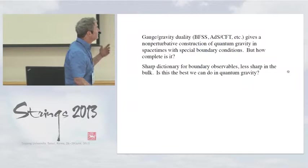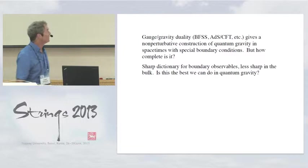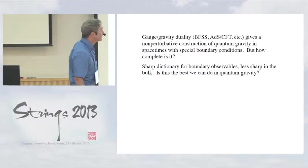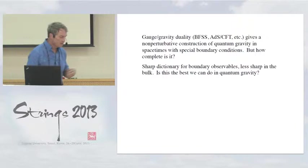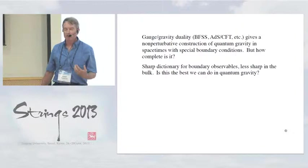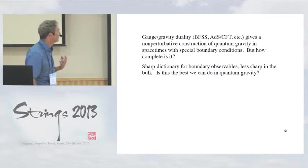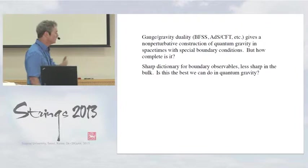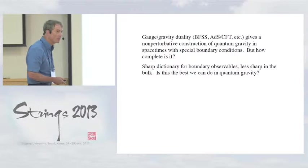So, gauge-gravity duality gives a non-perturbative construction of quantum gravity in various special spacetimes. I've written those words many times, and so have many of you, and I'd like to think about the question, just how complete is it? In particular, we have this very sharp dictionary for observables at the boundary, and it becomes less sharp as we move into the interior. But maybe that's fine, maybe that's as good as we can do in quantum gravity, because in quantum gravity it's hard to find sharp observables. The boundary of spaces like anti-de Sitter is very special because the metric is pinned down. It's one of the rare cases in quantum gravity where there are simple sharp observables, and so maybe these approximate observables in the interior are the best we can do.